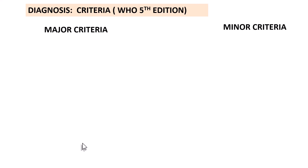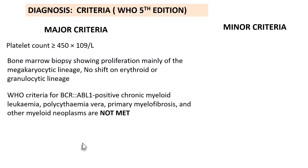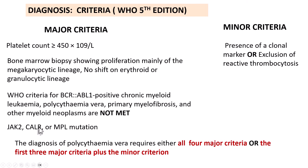For diagnosis, WHO categorizes the criteria into major and minor. There are four major criteria and one minor criterion. The four major criteria are: platelet count more than 4.5 lakh; bone marrow biopsy showing proliferation mainly of the megakaryocytic lineage with normal erythroid and granulocytic lineage, lacking features of other myeloproliferative neoplasms, no BCR-ABL mutation, no polycythemia vera, and no primary myelofibrosis; and presence of JAK-2, CALR, or MPL mutation. The minor criterion is presence of a clonal marker or exclusion of reactive thrombocytosis.